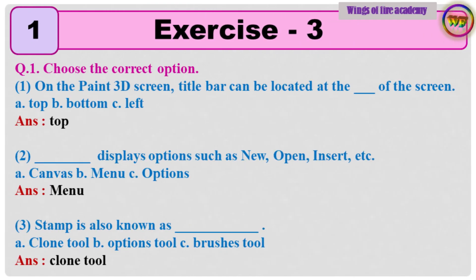Question number 1: Choose the correct option. Question 1: On the Paint 3D screen, the title bar can be located at the dash of the screen. A. Top, B. Bottom, C. Left. Answer: Top.